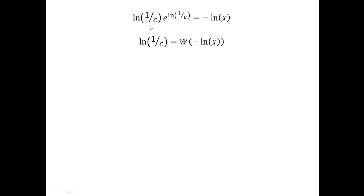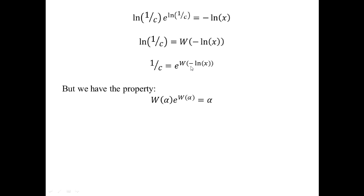Incorporating the Lambert W function, I can say that the argument ln(1/C) equals W(−ln X). It's now straightforward to solve for C: exponentiating both sides with base e gives 1/C = e^(W(−ln X)). To finish the derivation, I can also rewrite this using a key property of the Lambert W function.